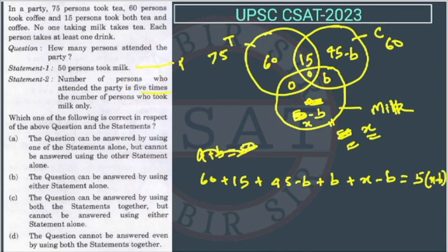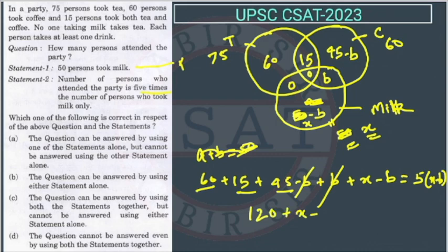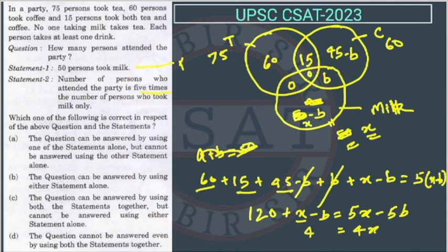Solving: the B's cancel partially, giving 60 plus 45 plus 15 equals 120, plus X minus B, equal to 5 times (X minus B), which is 5X minus 5B. Rearranging, this becomes 4X equals 4B plus 120. We still have two variables, X and B, so we cannot solve using Statement 2 alone.